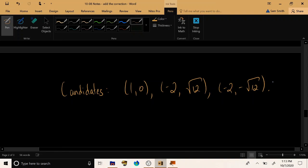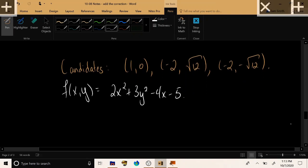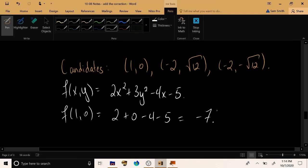And the only way for us to tell at this point at which one of these locations the absolute max and min are achieved are to go ahead and take these points and plug them directly into the function to see what the outputs are and compare the size of those outputs. So, let's take a moment and remind ourselves of the functions formula. We had 2x squared plus 3y squared minus 4x minus 5. If we go ahead and we plug in f of 1, 0, and we calculate that, we get 2 plus 0 minus 4 minus 5, which works out to be z equals negative 7.